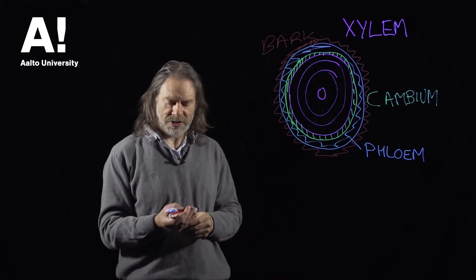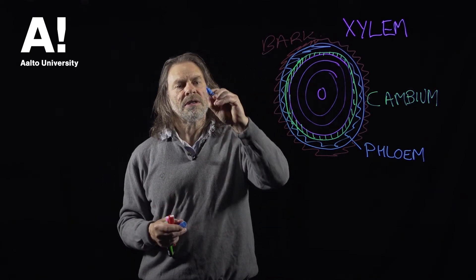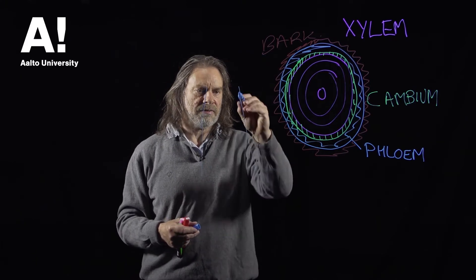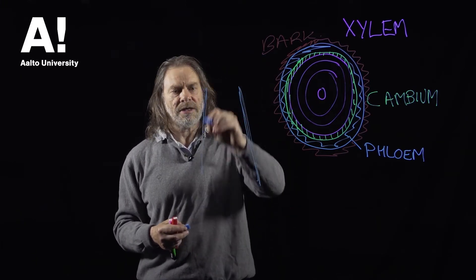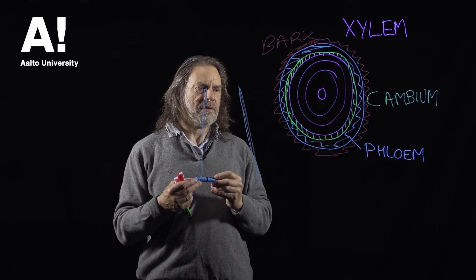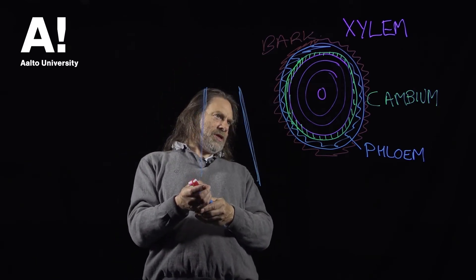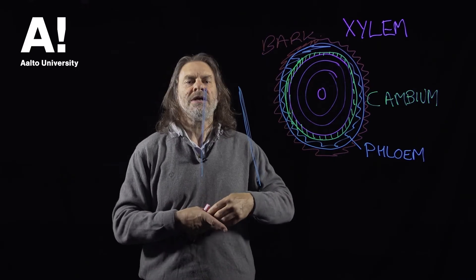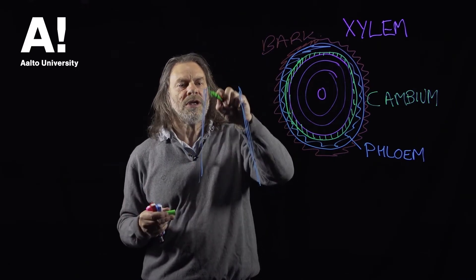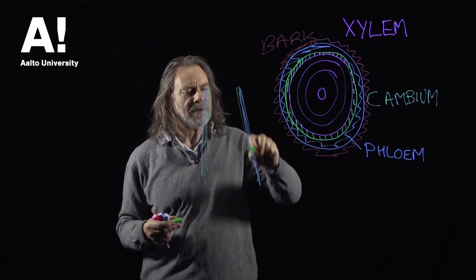So if we look at the tree in a cross section vertically, we have the phloem tissue here. We have the cambium. Which color is the cambium, green? Too many colors there. Cambium.